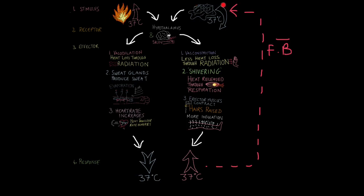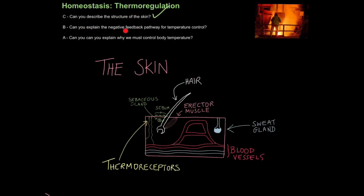Next, stimulus, body temperature falls, hypothalamus and skin, again, the receptors that detect that change. The effectors, vasoconstriction, so less heat loss through radiation, shivering, so more heat is released through respiration, and erector muscles in the skin contract, this raises the hair, so you get more insulation. The result is body temperature increases, so once again, we get negative feedback, which reverses the initial change. And that is how you explain the negative feedback pathway for temperature control.